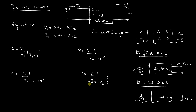A is called the open-circuit voltage ratio, since I2 = 0. B is called the negative short-circuit transfer impedance — negative because of the negative value of current. C is the open-circuit transfer admittance, since it is I/V. D is the negative short-circuit current ratio, again because of the negative current.